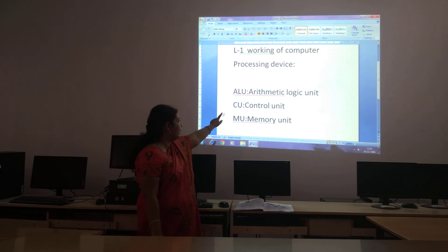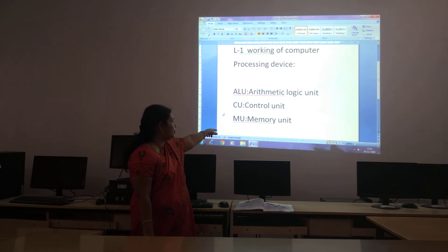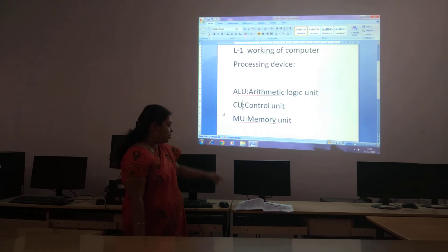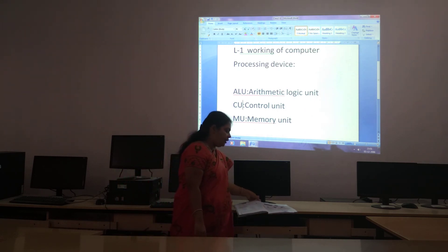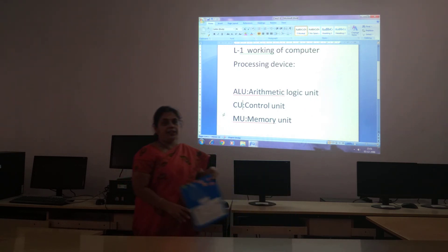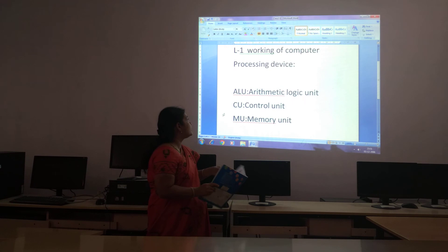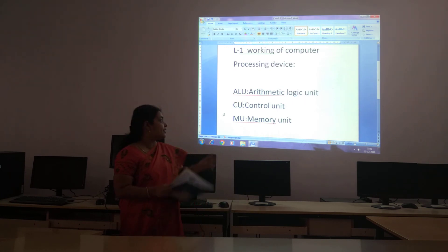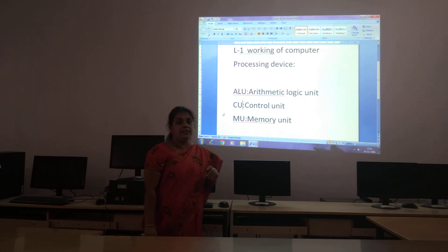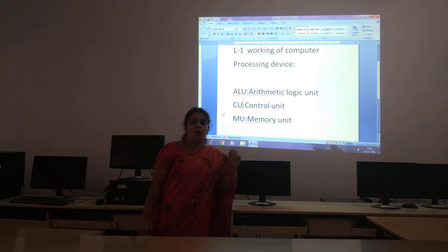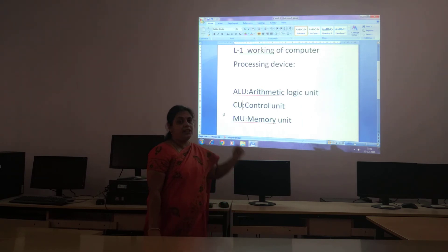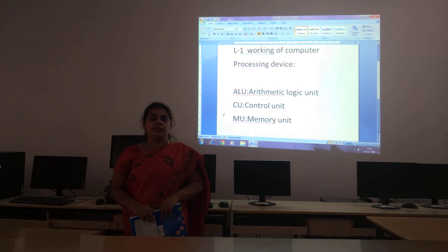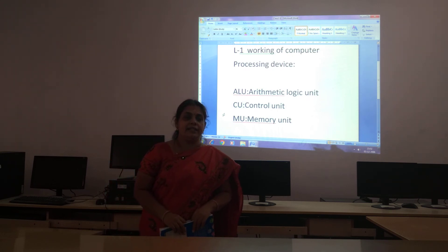So we have the Arithmetic Logic Unit, Control Unit, and Memory Unit. In your textbook it is given, children. Take your textbook and read these 3 important things from the processing device. Learn the spellings also — there are many new words, so memorize those spellings too. See you in the next class.